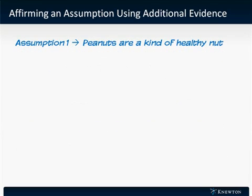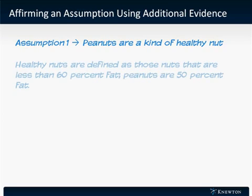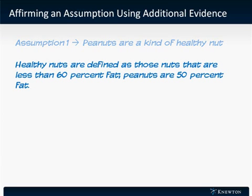Now, let's try to affirm that first assumption using additional evidence. We might see something like this: Healthy nuts are defined as those nuts that are less than 60% fat. Peanuts are 50% fat. This sentence tells us that peanuts are a healthy nut and restates or affirms our assumption.